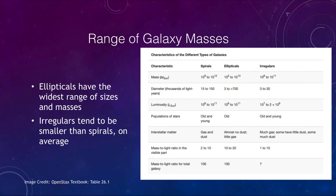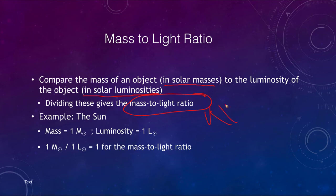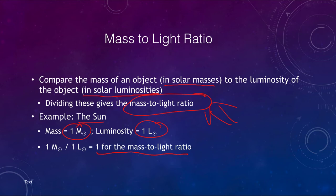Recalling what we covered for stars, we talked about the mass-to-light ratio. The mass-to-light ratio compares the mass of an object in solar masses to the luminosity of an object in solar luminosities — dividing those gives the mass-to-light ratio. Using the sun as an example: the sun has a mass of one solar mass and a luminosity of one solar luminosity by definition, so dividing one by one gives a mass-to-light ratio of one for the sun. This is a way to compare how much mass and how much light objects are producing.